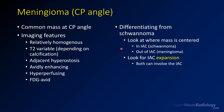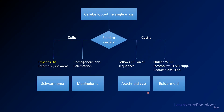In many cases you'll be trying to differentiate this from a schwannoma. The best feature is where the mass is centered: if it's in the internal auditory canal (IAC), it's likely a schwannoma; if it's outside the IAC, it's likely a meningioma. Look for expansion of the IAC, because both can involve it, as is the case here.